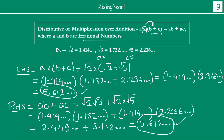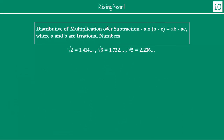Now let us wrap up this presentation by going through our last property. Distribution of multiplication over subtraction means that A times B minus C is equal to AB minus AC. This multiplication is distributed over the subtraction. What this property is stating is that this is actually valid for all irrational numbers.